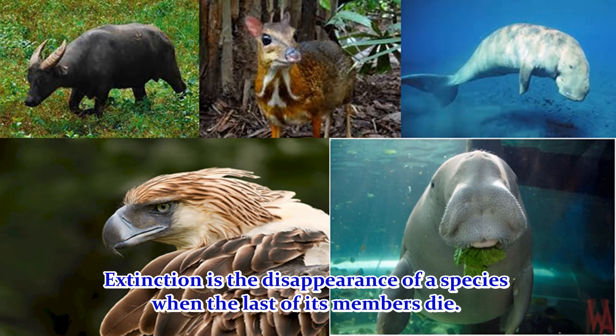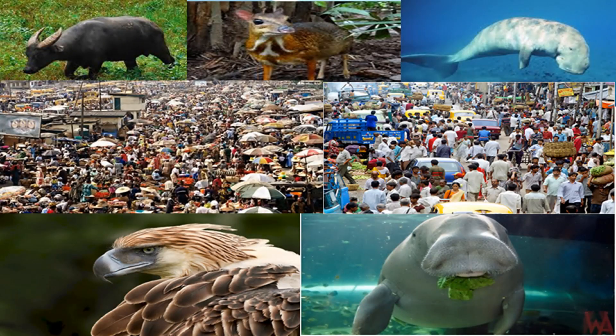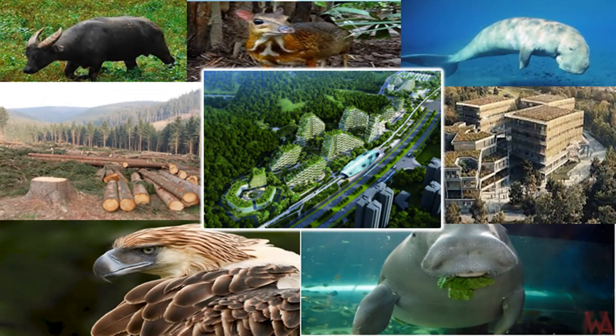Extinction is the disappearance of a species when the last of its members die. Changes to habitats can threaten organisms with extinction. As populations of people increase, the impact of their growth and development is altering the face of the earth and pushing many other species to the brink of extinction. Natural vegetation in many areas has been cleared, and concrete structures and increasing populations gradually take over. Some areas were also destroyed by natural disasters or human activities. Just as vegetation changes, animal populations also change, which may have major effects on the ecosystem, causing replacement of communities or development of a new environment.